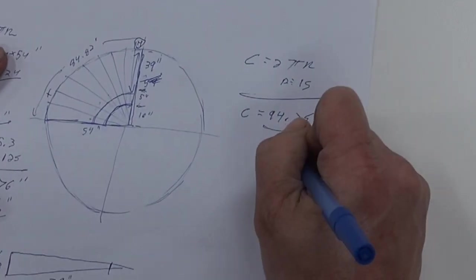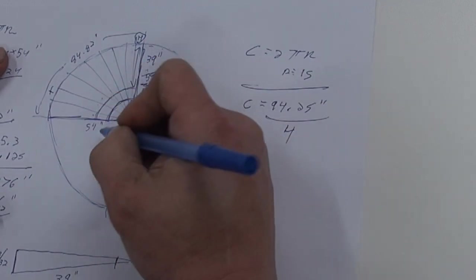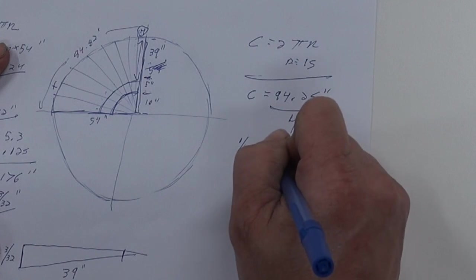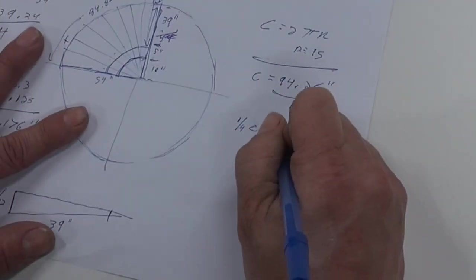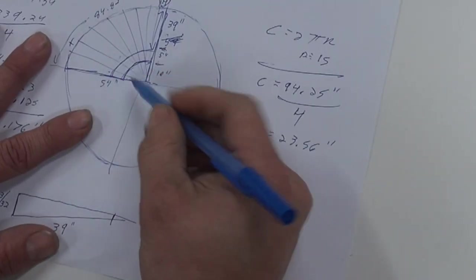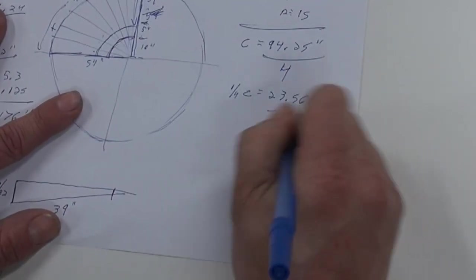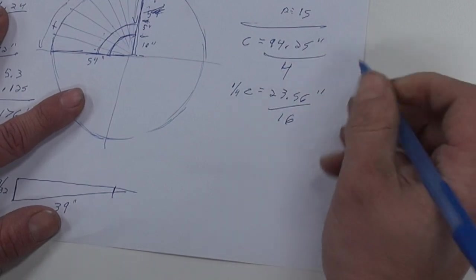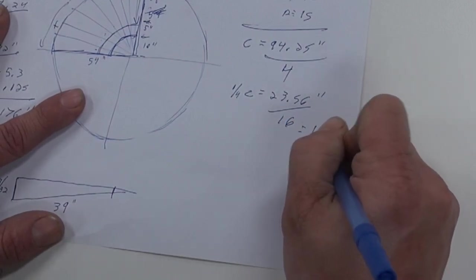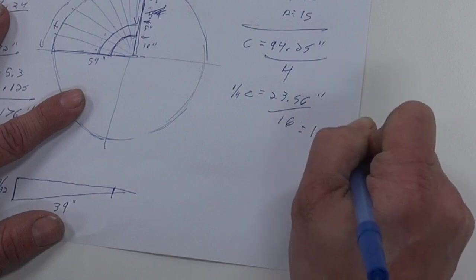Again, you want to divide that by 4 because we're going to quarter the segment. So 1 quarter C equals 23.56 inches. And again, we have 16 segments. So we're going to divide that by 16. And then that equals 1.47 inches.